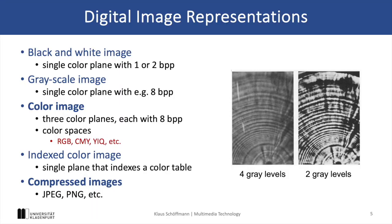In fact, there are many different image formats, and as we will see later, it is also possible to use a color table and save only a reference to this color table — an index for each pixel. Compressed images like JPEG or PNG optimize storage by reducing redundant information in the image, and this will be covered later in this course in detail.